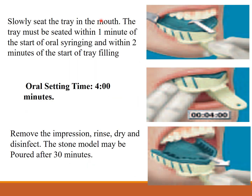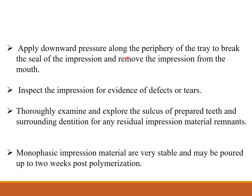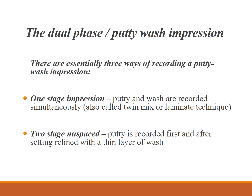Remove the retraction cord if placed, and inject monophase material around the prepared teeth. The tray must be seated within one minute of the start of oral syringing and within two minutes of the start of tray filling. Oral setting time is four minutes. Remove the impression, rinse, dry, and disinfect. The stone model may be poured after 30 minutes. Apply downward pressure along the peripheral tray to break the seal, then remove the impression and inspect it for defects or tears. This is a very stable material that can be poured up to two weeks later.